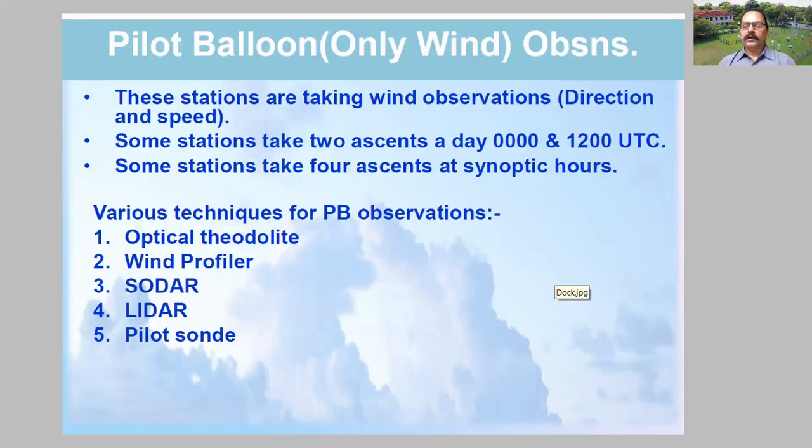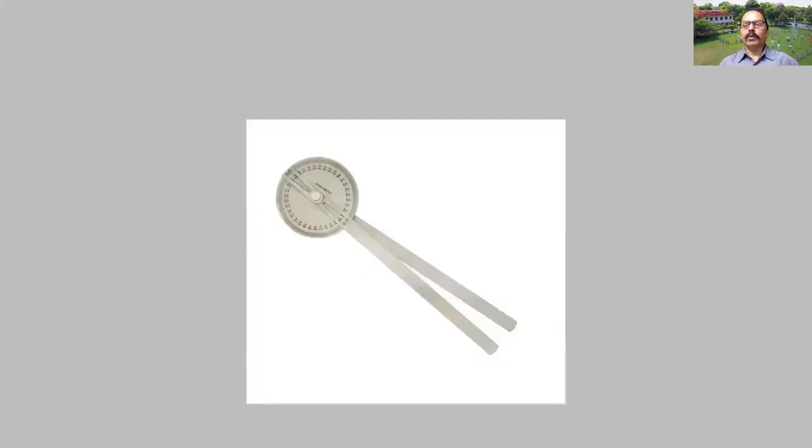Some stations take two observations, two ascents a day - zero and 12 UTC, that is morning 5:30 and evening 5:30 Indian Standard Time. Some stations take four ascents at synoptic hours - that is zero, six, twelve, and eighteen. Wherever RSRW observatory and pilot balloon observatory are co-located, zero and twelve observations are taken by RSRW observatory, six and eighteen are taken by PB observatory. We are having various techniques - optical theodolite, wind profiler, sodar, lidar, pilot sonde. These are all the methods by which pilot balloon observations are taken.